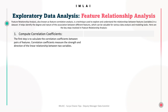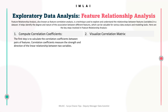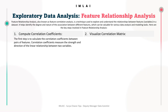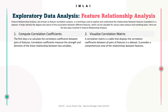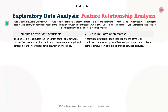The second step is to visualize the correlation matrix. A correlation matrix is a table that displays the correlation coefficients between all pairs of features in a dataset, providing a comprehensive view of feature relationships. Heat maps are commonly used to visualize it, where colors represent the magnitude of the correlation coefficient, helping identify highly correlated or anti-correlated features.